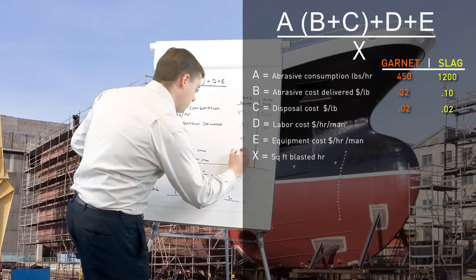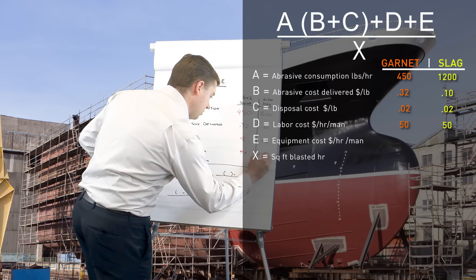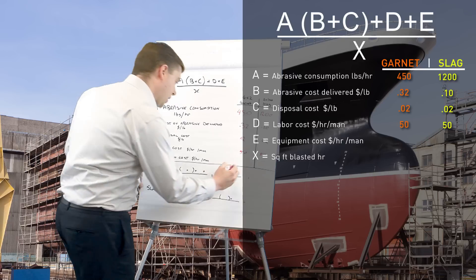Our labour cost was $50 per hour per man and our equipment cost is $100 an hour.